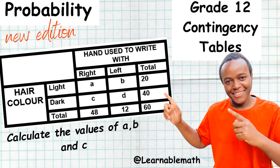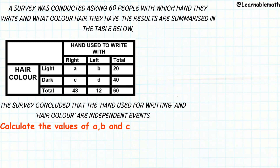Hi everybody, thank you very much for joining us. Today we're going to be looking at a question on contingency tables. A survey is conducted asking 60 people which hand they write with and what hair color they have. The results are summarized in the table below. The survey concluded that the hand used for writing and hair color are independent events.